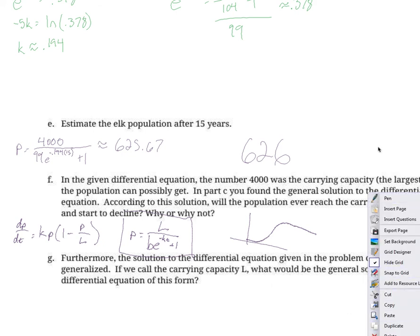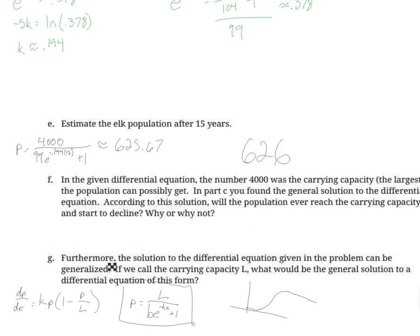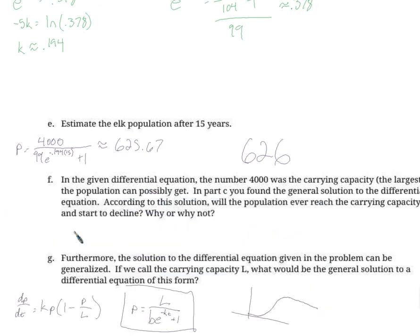I answered the wrong thing. This is supposed to be down here. I wasn't reading very slowly. And given a differential equation, this, with 4000 in it, 4000 is the carrying capacity, largest population possible. In part c we found this solution here. According to the solution, will the population ever reach the carrying capacity and start to decline?